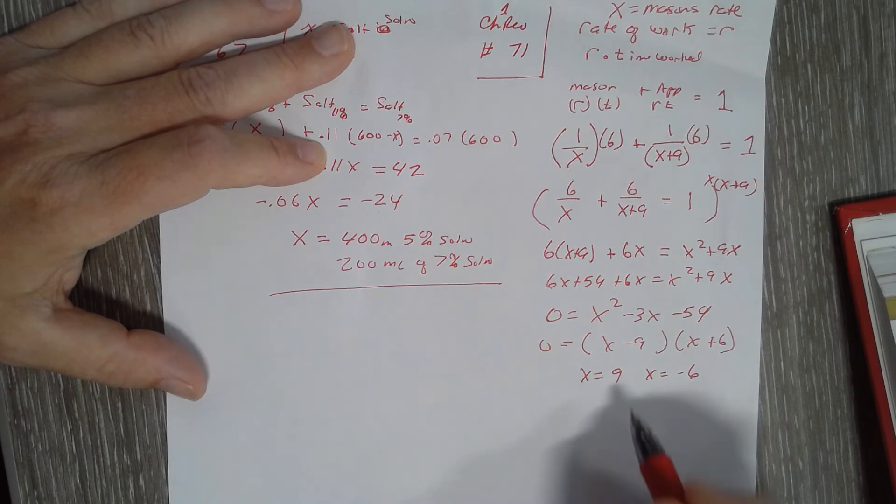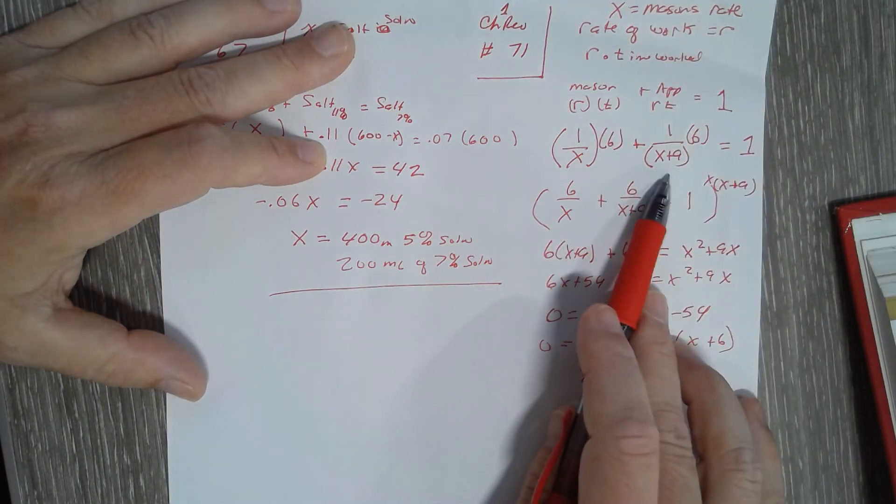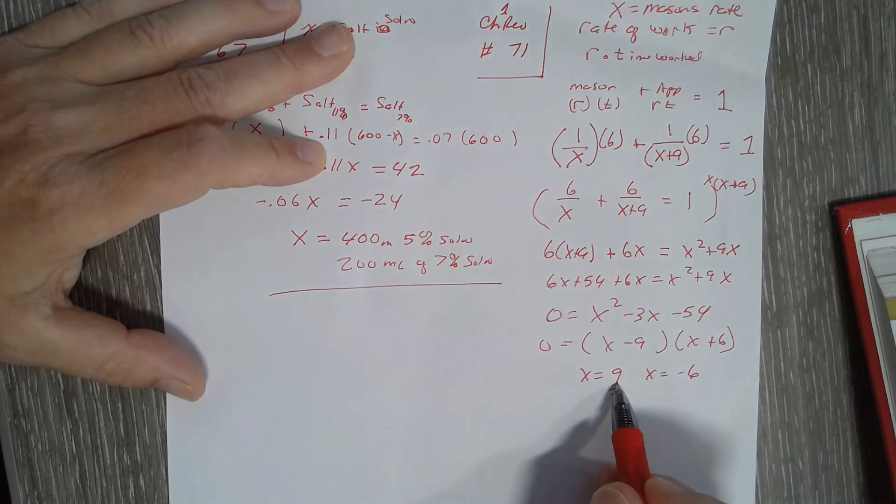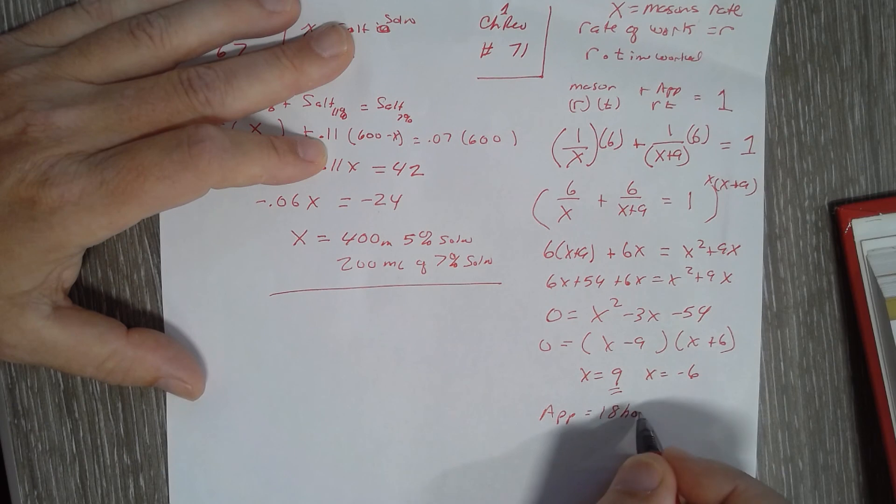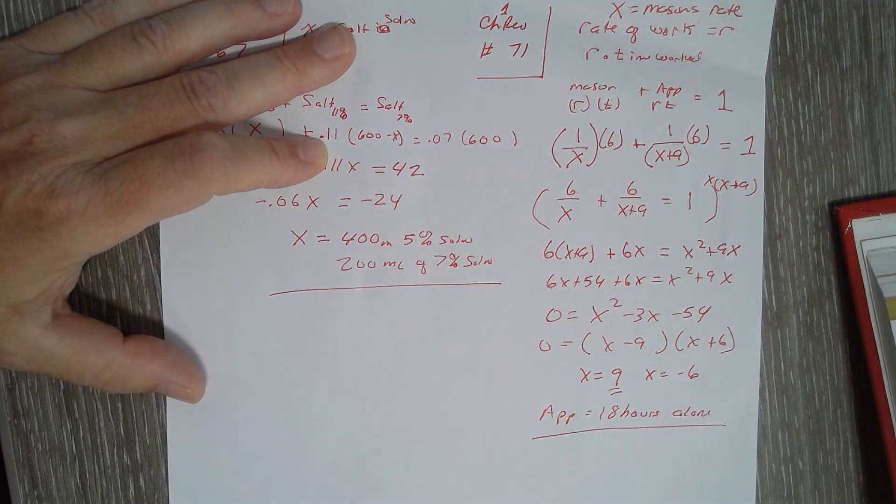Now what they want to know is how long it would take the apprentice to work alone. Well, x is the mason's rate. The apprentice takes nine hours longer, so the mason would take nine hours to do it alone, and the apprentice is 18 hours. So the apprentice would have to take 18 hours to do it alone.